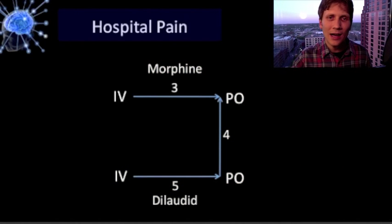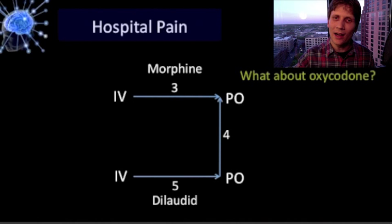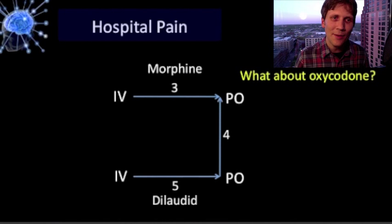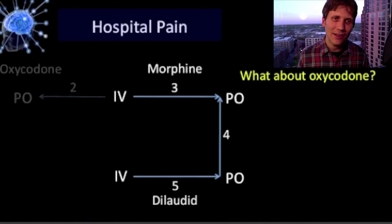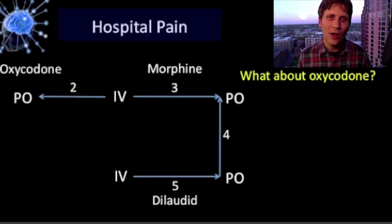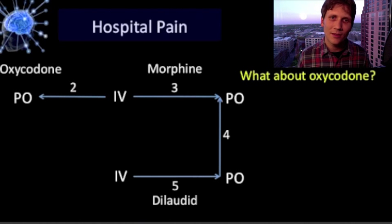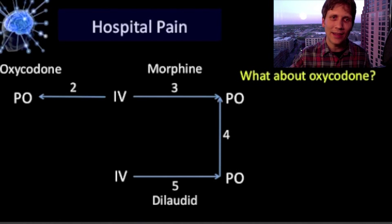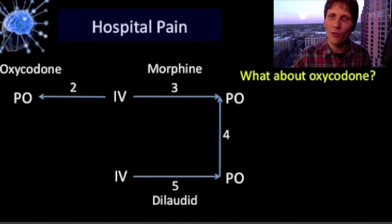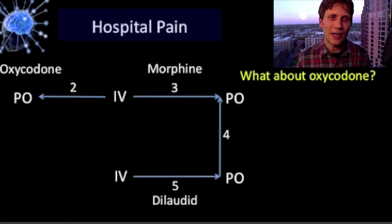The last part is oxycodone. Oxycodone is not actually on the diagram, so it takes an additional step. If you want to get to oxycodone, you follow the arrows until you get to IV morphine and then you multiply by two.